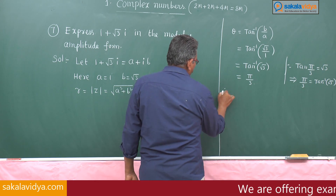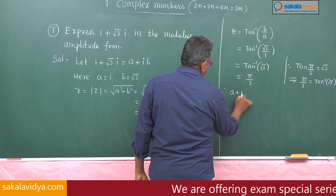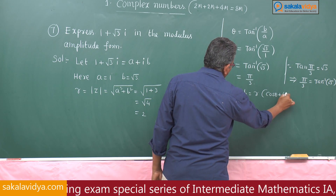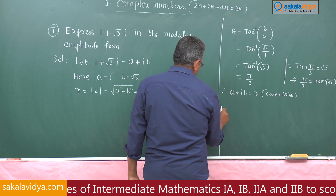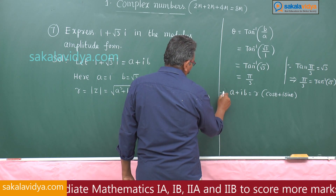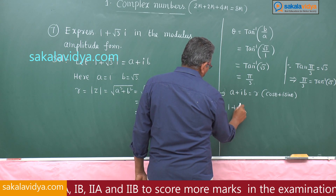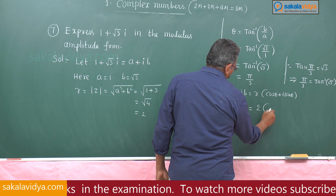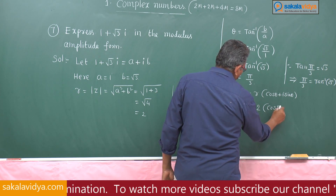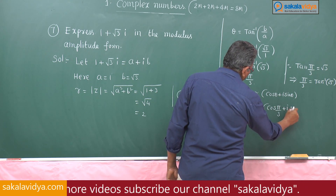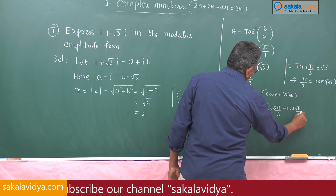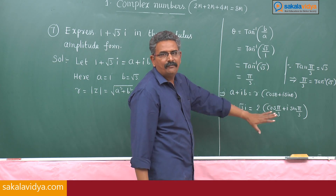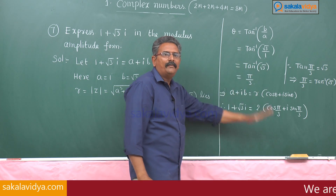Using the formula a plus ib equals r times (cos theta plus i sin theta), therefore 1 plus root 3 i equals 2 times (cos π/3 plus i sin π/3). This is the modulus-amplitude form, also called polar form or trigonometric form.